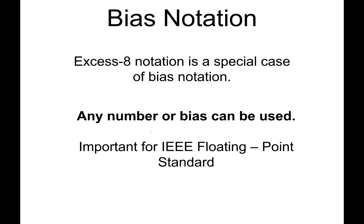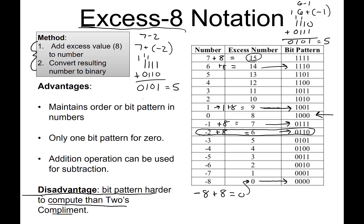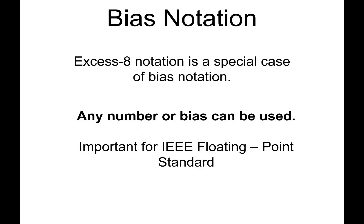So this excess-8 notation that we've been looking at here is actually a special case of what's known as bias notation. With excess-8, that means we're biased around 8 when we write our binary numbers. Any number or bias can be used.